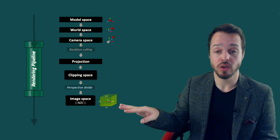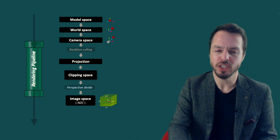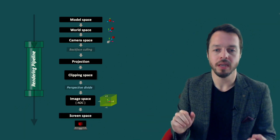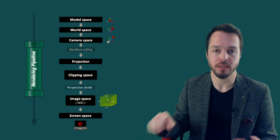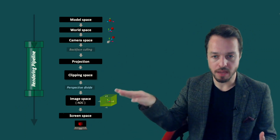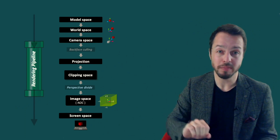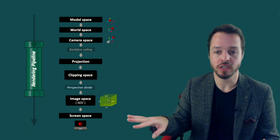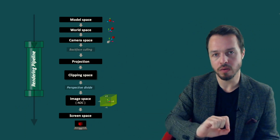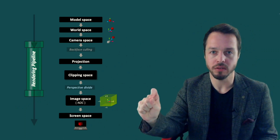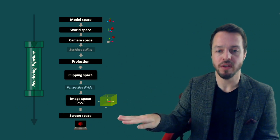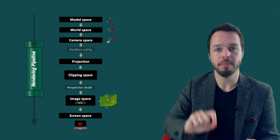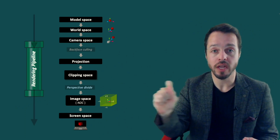Are we done? There is one final step: screen space. We transform from image space to screen space, mapping and scaling everything for the actual device so we can paint the correct pixels. We map everything into our display driver and into screen coordinates, and that is rasterization.